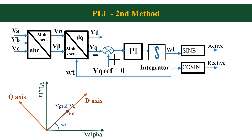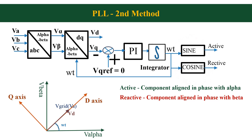Now going back to the PLL block diagram, you can see a PI controller, which I have used to make the VQ value 0. So I have given VQ reference as 0. The output of the PI controller is given to an integrator to find omega t. And finally, we use sine and cosine functions to generate the active and reactive components. That is the final output of PLL. This is how we make a PLL for a 3-phase grid connected inverter.